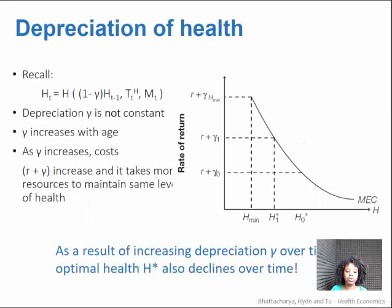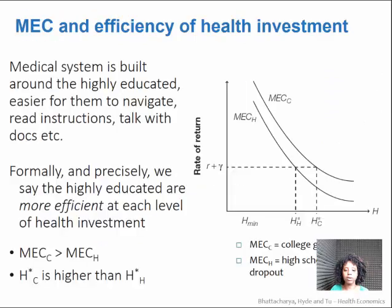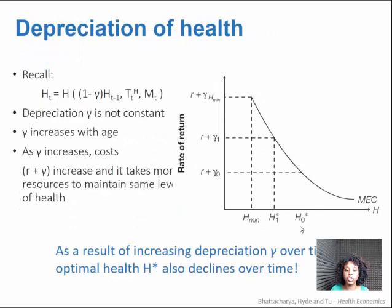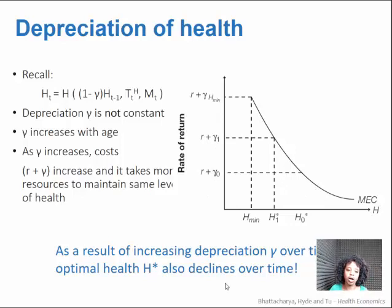One more thing to point out: in the prior curve for education, there are literally two separate curves because the marginal efficiency of the individual differs by their education. Yet for aging, which represents one individual over time, it's just one curve — but you're moving along it because delta is changing, because the price is changing. So it's the intersection of the total cost with that same curve that is driving changes in H star.